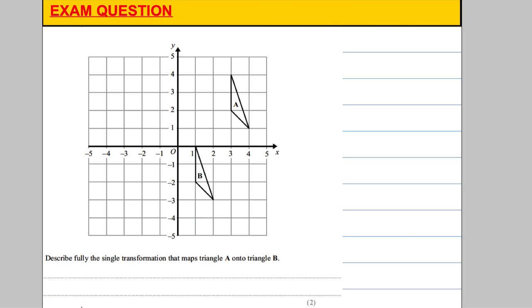Now, one exam question for you. Describe fully the single transformation that maps triangle A onto triangle B. From A onto B—because they're both the same way up and the same size, it's a translation. That gets you one mark. The second mark is for describing the vector.